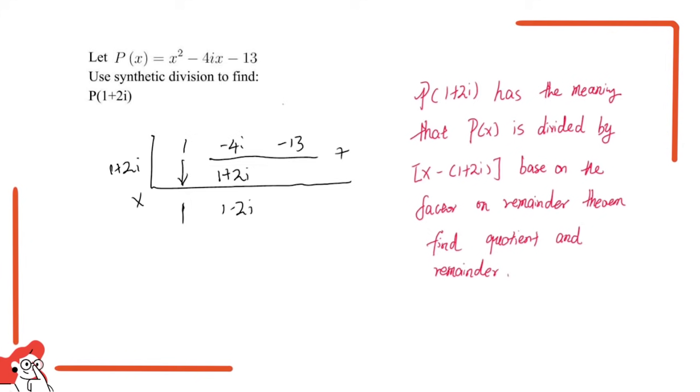And then we do multiplication again. We multiply 1 plus 2i by 1 minus 2i, which we should get... okay if we still remember the steps, there is a quick step to solve questions like this, which is if we have a minus b times a plus b, what we should have is a squared minus b squared. This theorem also applies here.